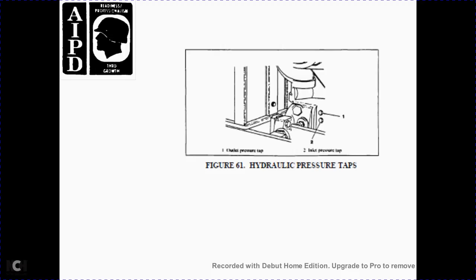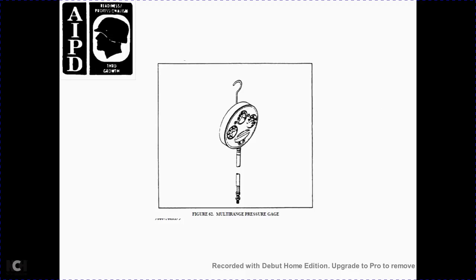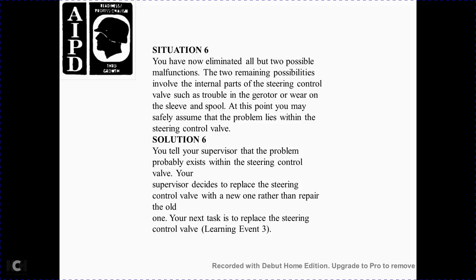Figure 61 shows the idle hydraulic pressure tap, outlet pressure tap, and inlet pressure tap. Figure 62 shows the multi-range pressure gauge. Situation 6: You have now eliminated all but two possible malfunctions. The two remaining possible causes involve the internal parts of the steering control pump valve - the gear sleeve and spool. At this point, you can safely assume the problem lies with the steering control valve. Solution 6: You tell the supervisor that the problem exists within the steering control valve. The supervisor decides to replace the steering control valve with a new one rather than repairing the old one. You are tasked to replace the steering control valve.